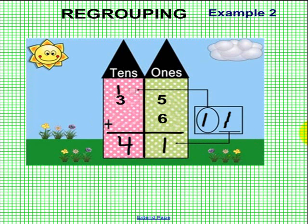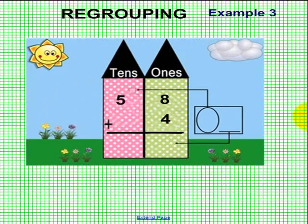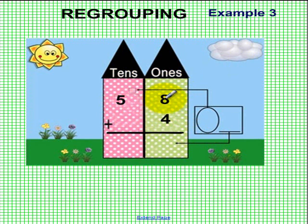Hopefully some of you are catching on, but let's go to another example. Okay boys and girls, let's have some fun with this third example. We have a big number: fifty-eight. We have a five in the tens column and an eight in the ones. Fifty-eight plus four — let's add them together. Eight plus four is what?